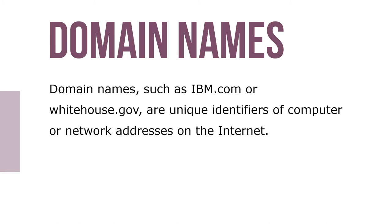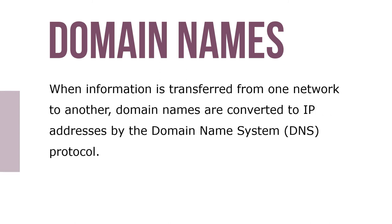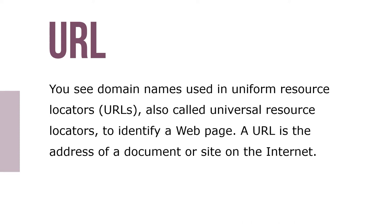Domain names such as IBM.com or whitehouse.gov are unique identifiers of computer or network addresses on the internet. When information is transferred from one network to another, domain names are converted to IP addresses by the domain name system DNS protocol. You see domain names used in uniform resource locators, URLs, also called universal resource locators, to identify a web page. A URL is the address of a document or a site on the internet.